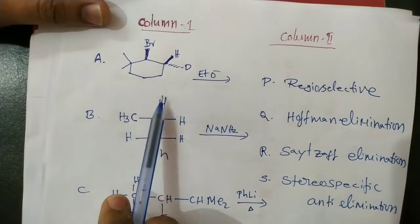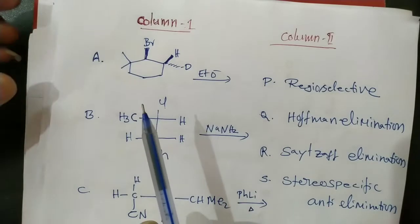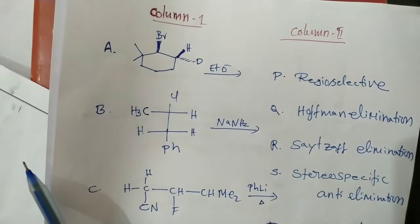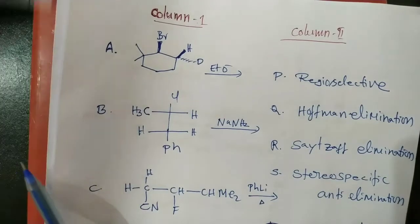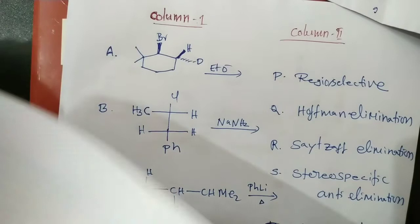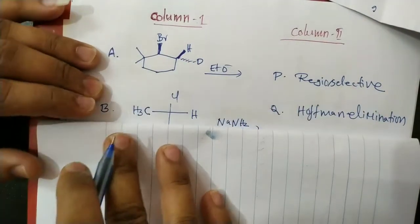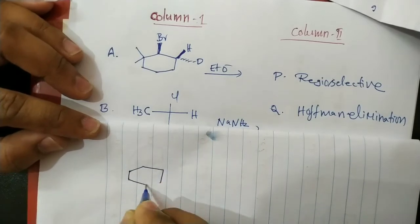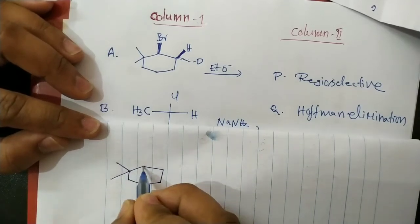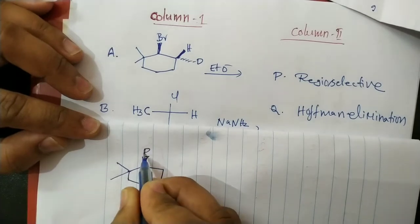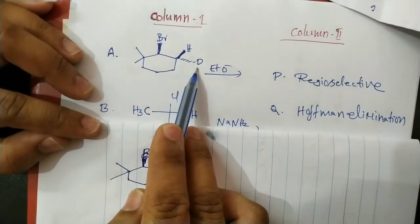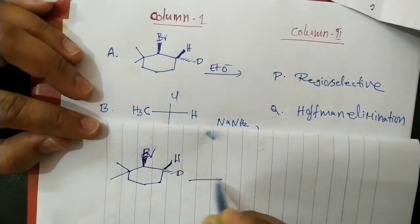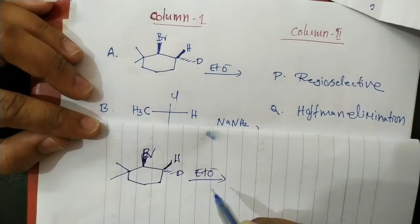So here is the first reaction. In this elimination reaction, there is a methyl group, with bromine above the plane. Here hydrogen is above the plane and deuterium is below the plane. It is an E2 elimination reaction.